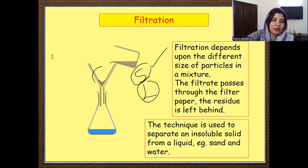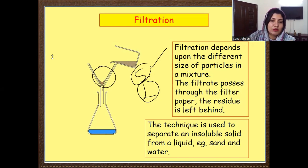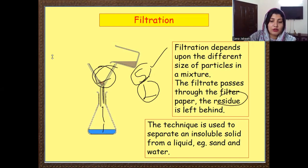What will happen? The sand will remain on the filter paper. Filtration depends on the size of the particles in the mixture, and the filtrate passes down through the filter paper. The thing that remains on the upper side is known as the residue. This technique is used to separate an insoluble solid from a liquid — the example being sand and water.